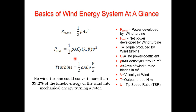The power available from the wind — the mechanical power — is given by one-half rho A v-cubed. If we multiply this by the power coefficient Cp, we get the net shaft power. Here Cp is a function of lambda and beta, where lambda is the tip speed ratio and beta is the blade pitch angle. This also gives the torque equation of the wind turbine.